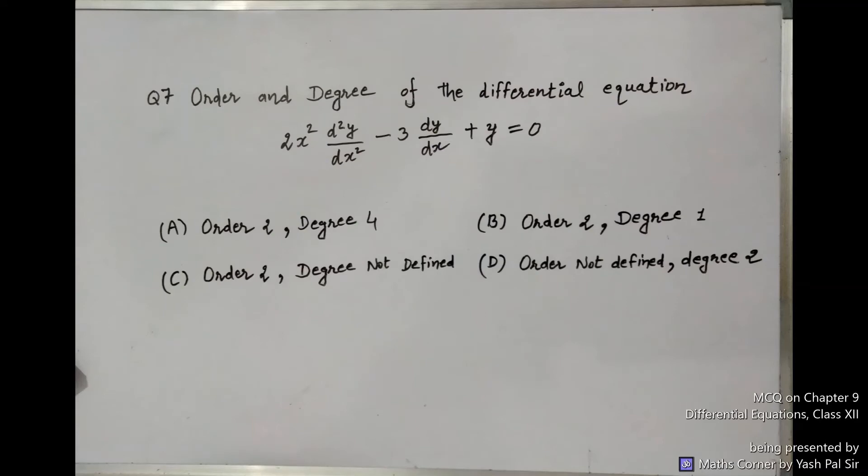Question number 7: Find the order and degree of the differential equation 2x²·(d²y/dx²) − 3·(dy/dx) + y = 0. Find the order and degree of this differential equation.